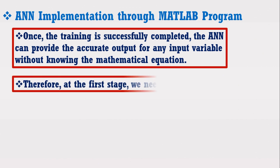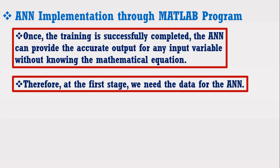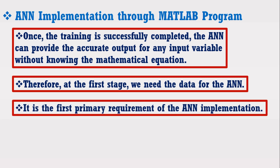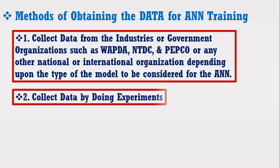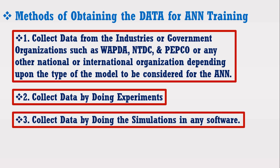Therefore, at the first stage, we need data for the ANN — this is the primary requirement of ANN implementation. The data can be collected from industries or government organizations such as WAPDA, NTDC, and PEPCO, or any other national or international organization depending upon the type of model. The data can also be collected by doing experiments, or by doing simulation in any software.